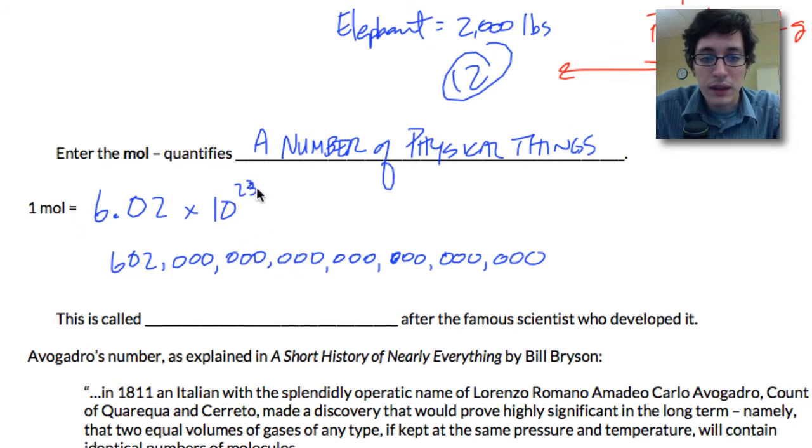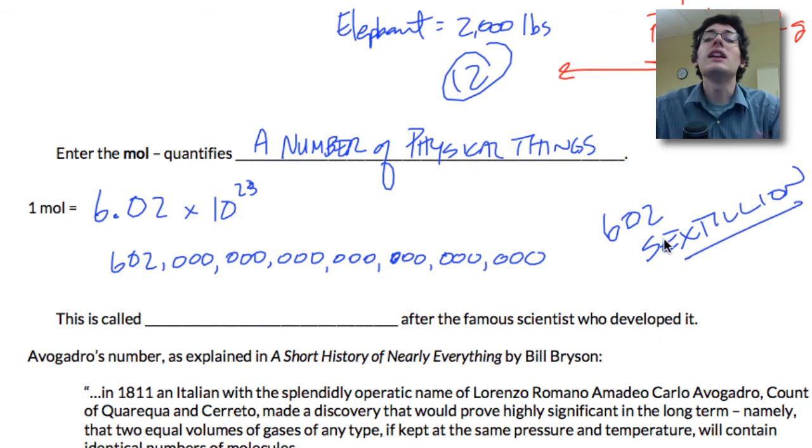That is 602 sextillion things. It is huge, way bigger than anything we can even comprehend. And this is called Avogadro's number.